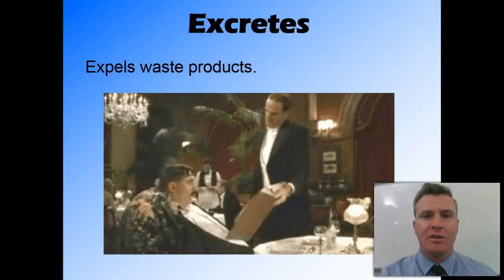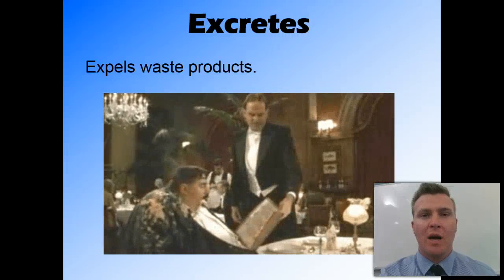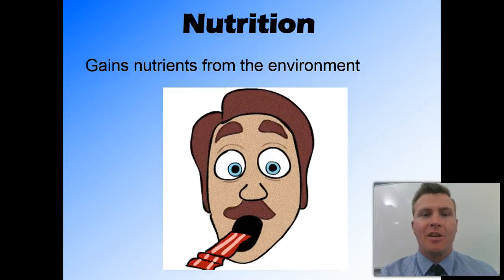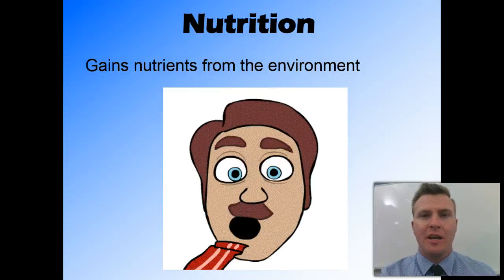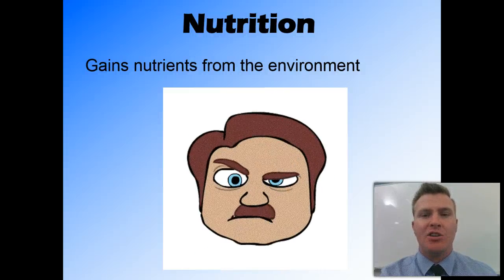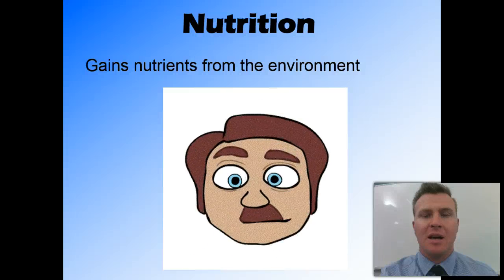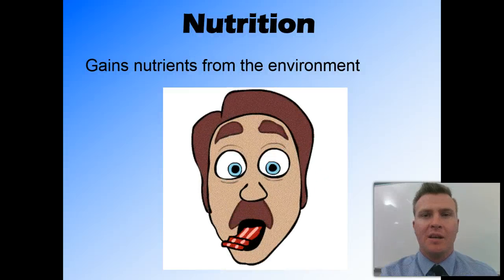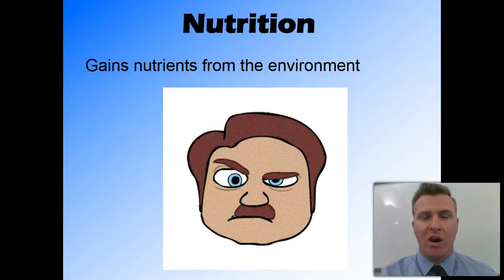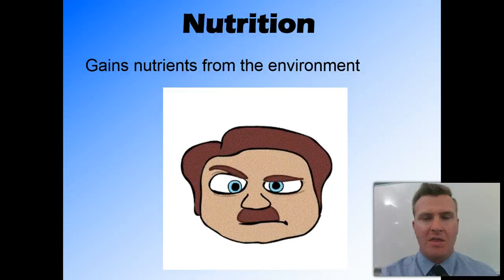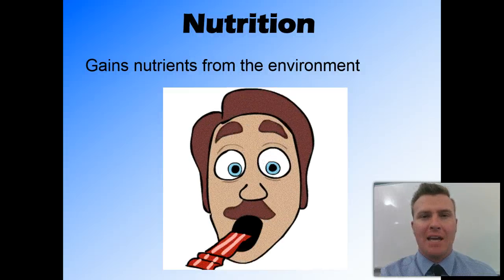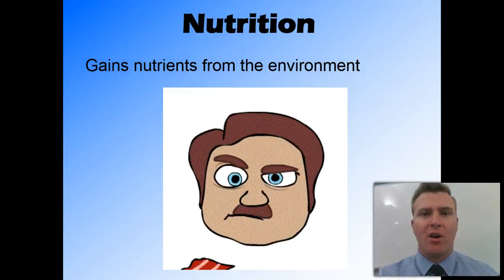Excretion, or excretes, is where it expels waste products from the body. And nutrition is gaining nutrients from the environment. All living things gain nutrients from the environment, whether they eat them or absorb them — in some way, they get nutrition from the environment.